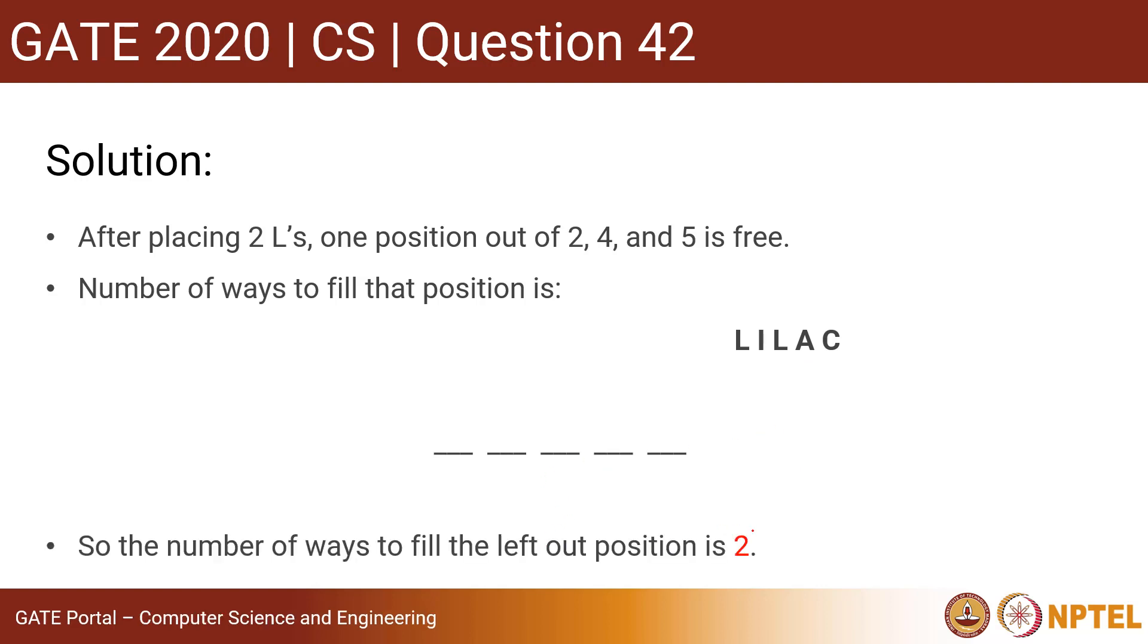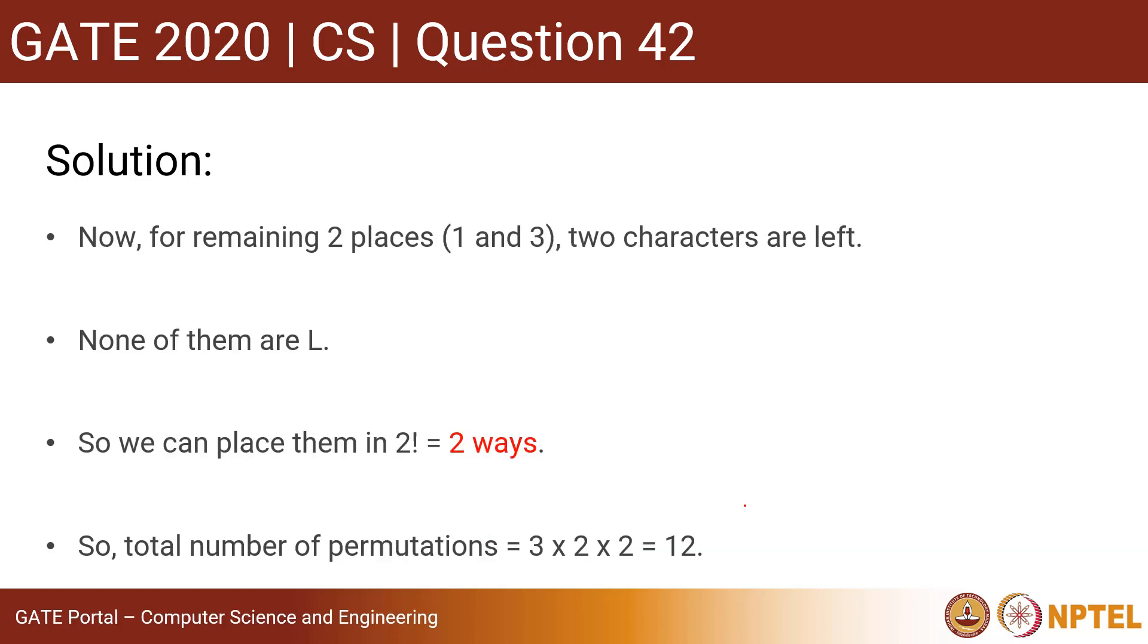So the number of ways to fill the left-out position is 2. Now for the remaining two places, 1 and 3, that is 1, 2, 3, 4, and 5, these three positions are left. So to fill them, none of the L's are left because they are already filled, and another one character is filled in the remaining position. So we have two characters remaining.